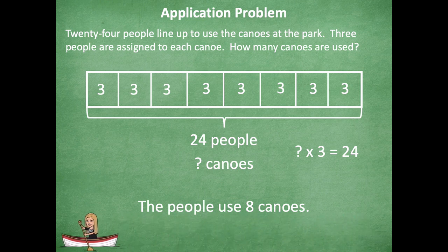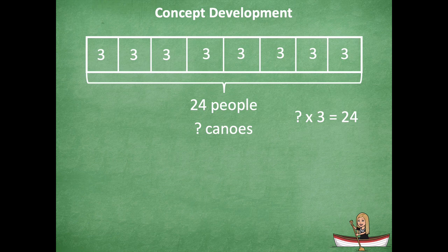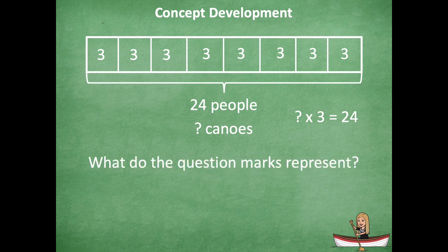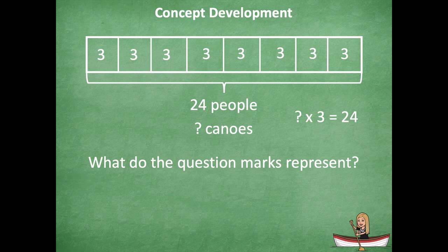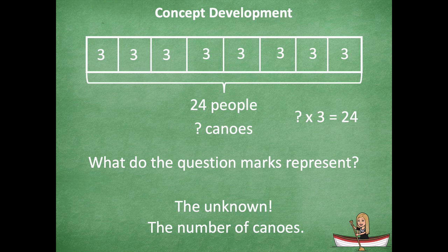Oh, there I go canoeing away. Okay. So what does the question mark represent in this problem? Yeah, it's the unknown, which is also the number of canoes. So it's the information that I don't know. That's what unknown means.